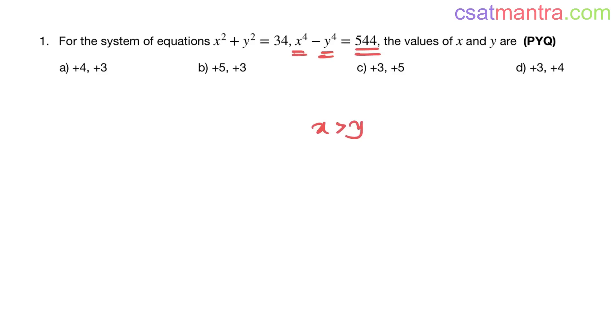Now eliminate the options which has x less than y. 3 less than 5, so option C is eliminated. 3 less than 4, so option D is eliminated.